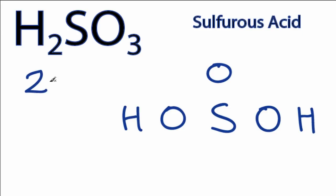We have a total of 26 valence electrons for the H2SO3 Lewis structure. We'll put two electrons between atoms to form the chemical bonds.